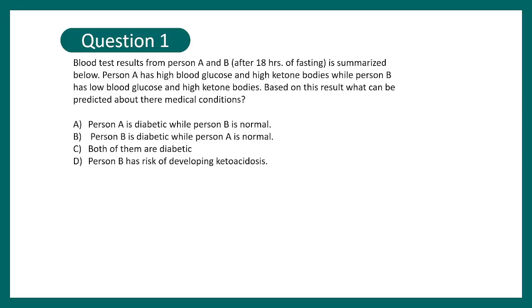Let's move on to the question answer sessions. Question one says blood test results from person A and person B after 18 hours of fasting is summarized below. Person A has high blood glucose and high ketone bodies while person B has low blood glucose and high ketone bodies.